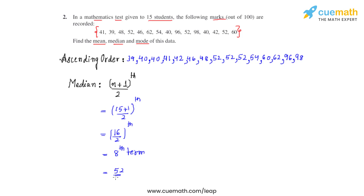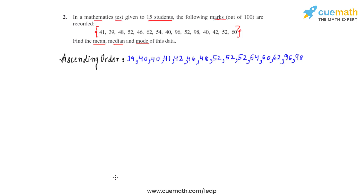Our final step is to find the mode for the given data, which we find by identifying the observation occurring the maximum number of times. As the data is already arranged in ascending order, let's look for the observation that occurs the most. We can see that 52 is an observation occurring three times, which is the maximum. So 52 becomes the mode for the given set of data.